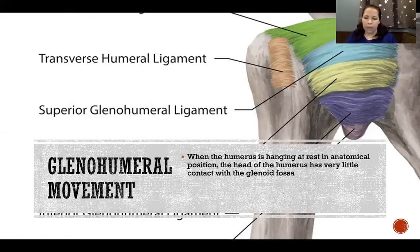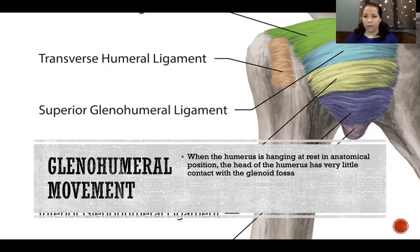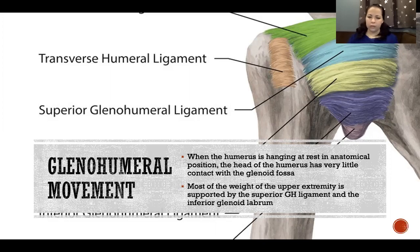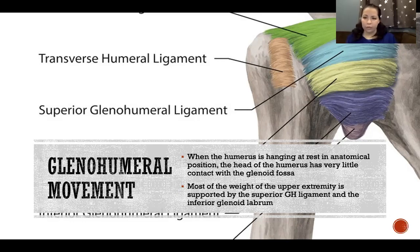When the humerus is hanging at rest in anatomical position, the head of the humerus has very little contact with the glenoid fossa. The ligamentous support and joint capsule are fairly loose to allow great mobility, so when the arm hangs by the side there's a small gap due to the weight of the extremity. Most of the weight of the upper extremity is supported by the superior glenohumeral ligament and the inferior glenoid labrum.